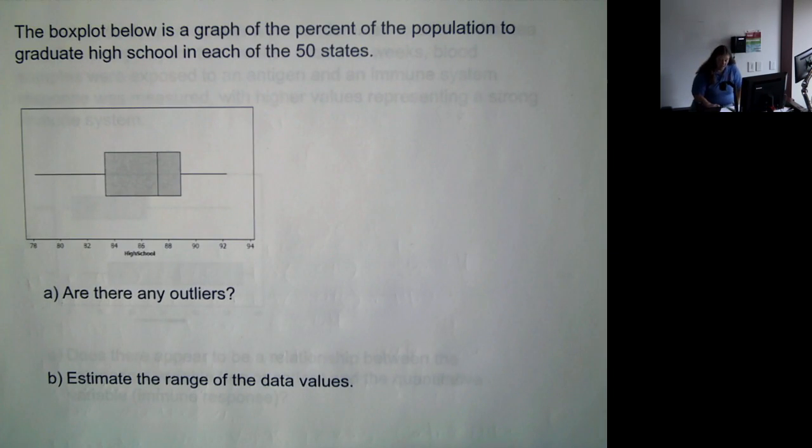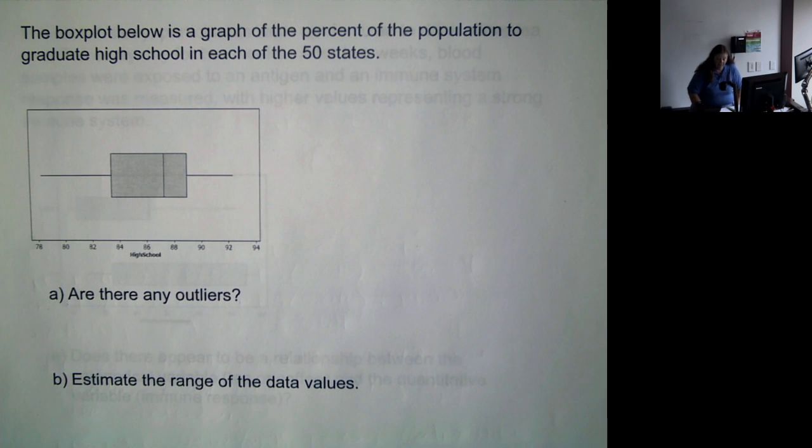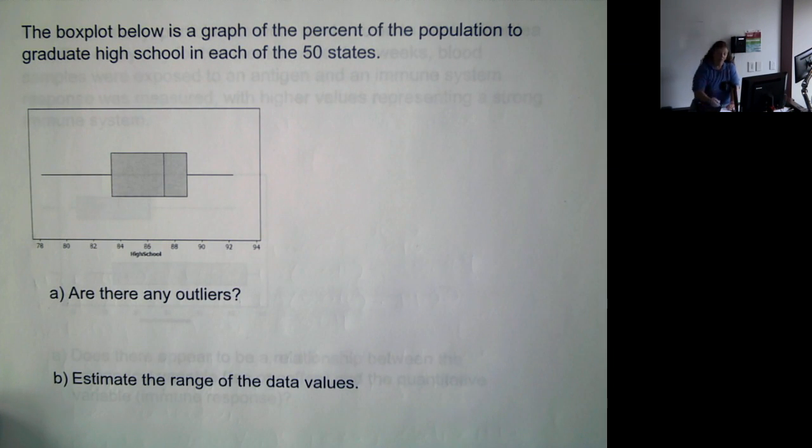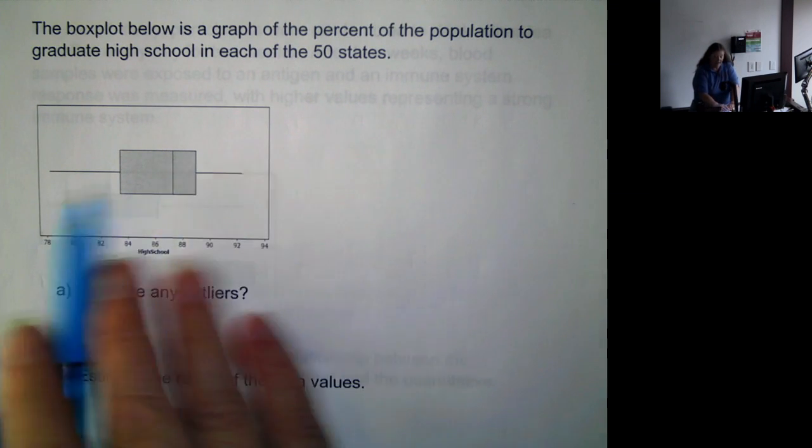Okay, let's look at this box plot. This is a graph of the percent of the population to graduate high school in each of the 50 states. So, are there any outliers? Well, if we look at this, remember outliers are identified by asterisks.